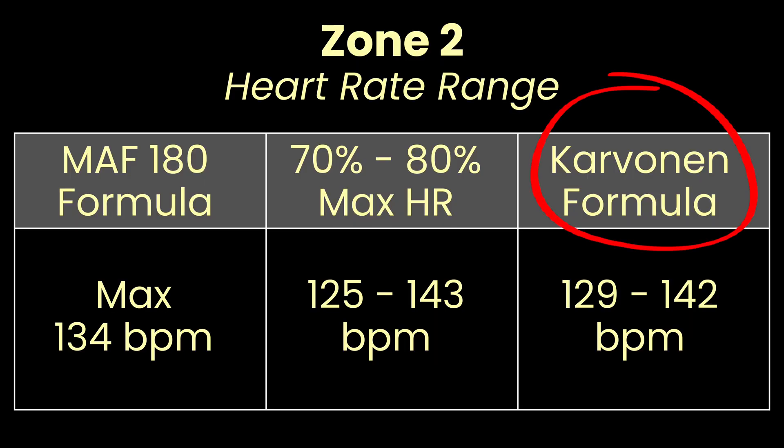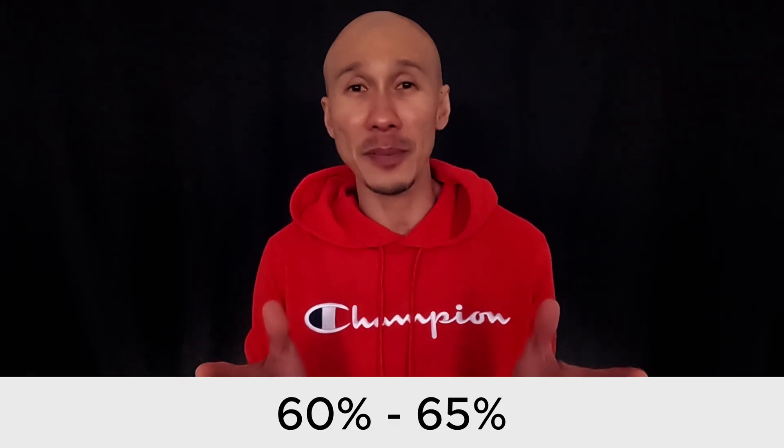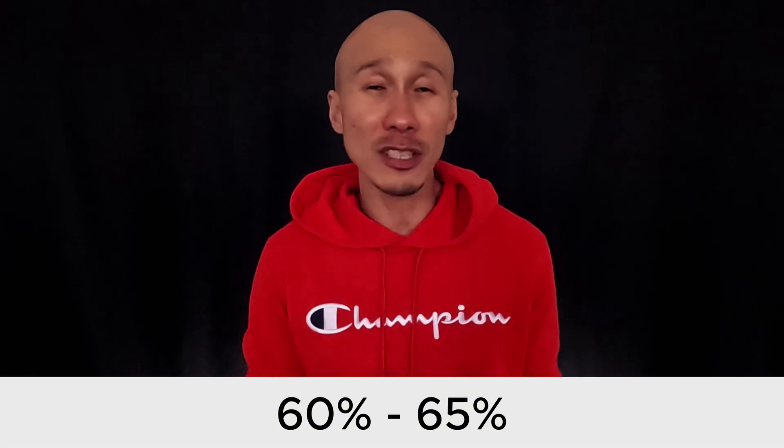Finally, the Karvonen formula puts my zone 2 range between 129 and 142 beats per minute. Similar to the percentage of max heart rate calculation, the top end of this range is too high for my zone 2. Thus, when using the Karvonen formula, I should be using 60 to 65% as my zone 2 intensity range instead of 60 to 70%.